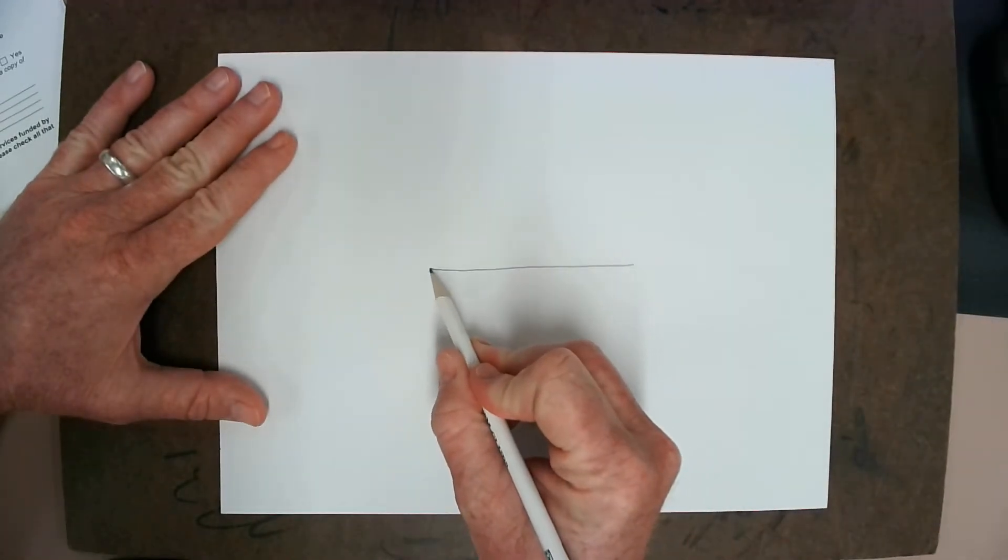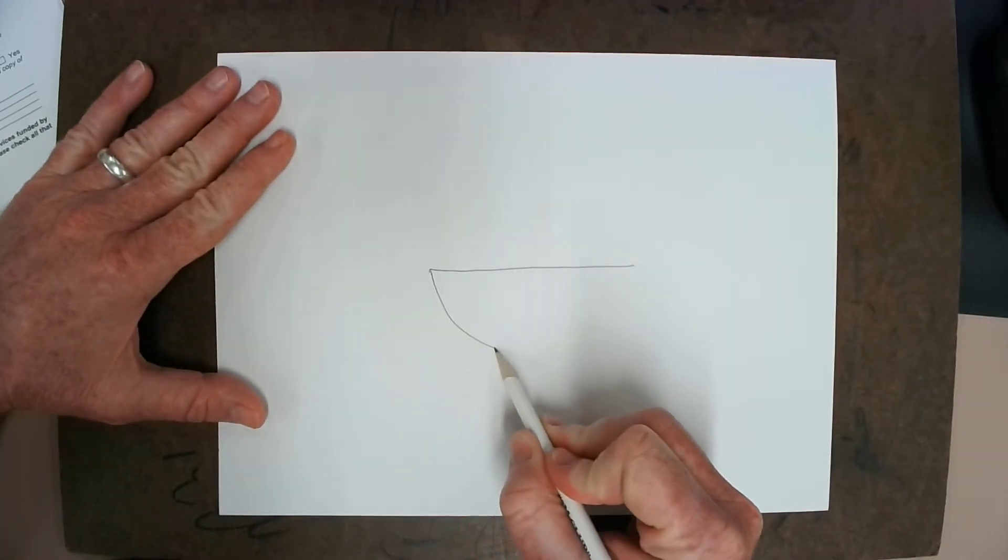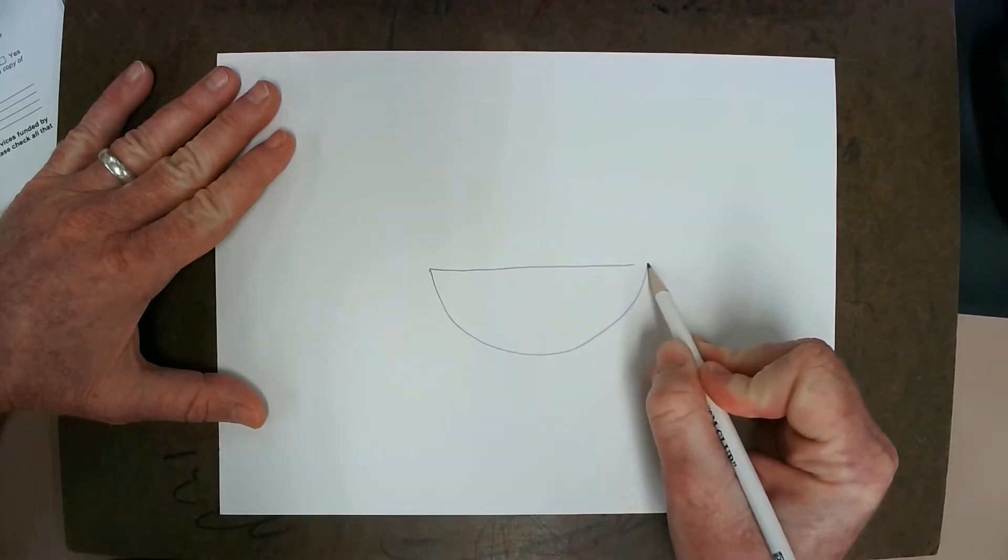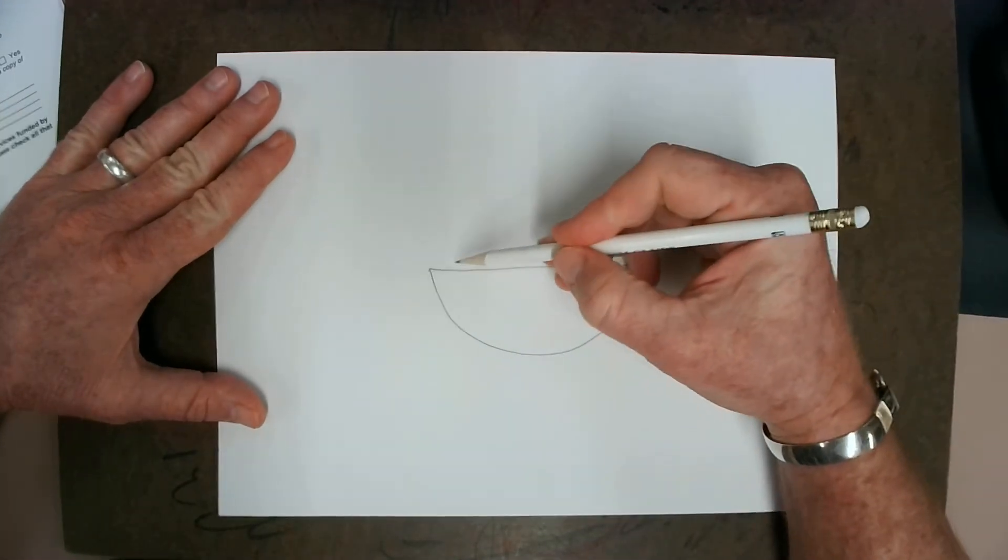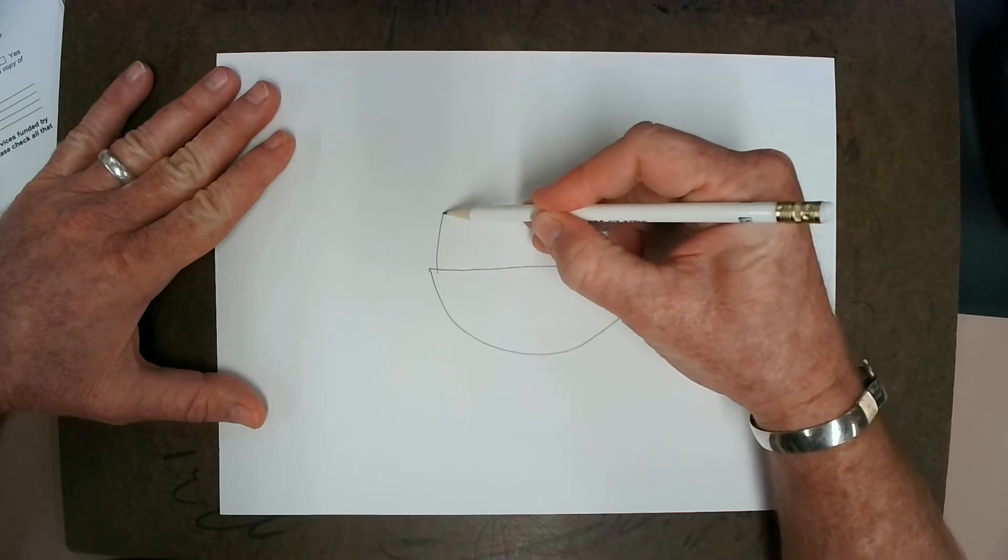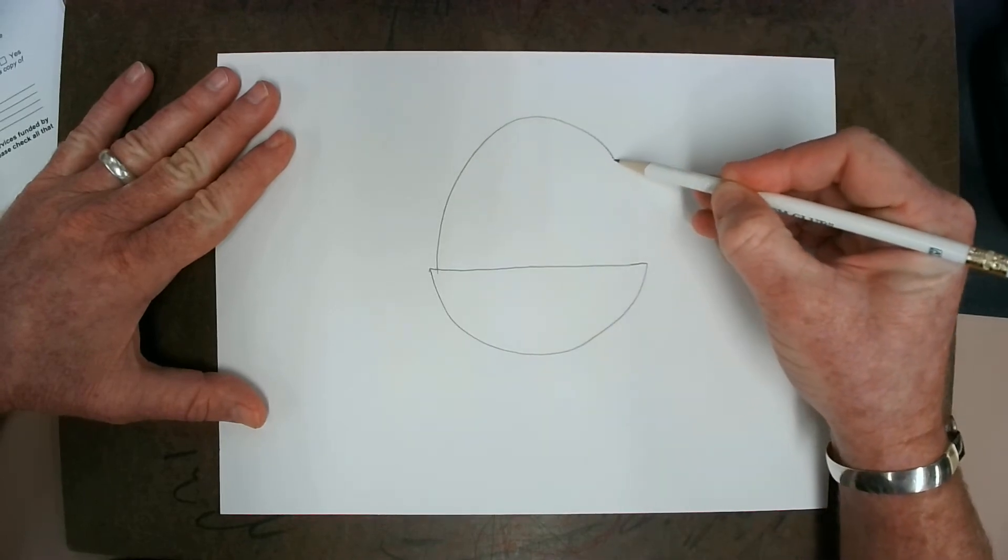And now I'm going to draw a curved line underneath it, like a big upside-down U. Actually, this almost looks like an upside-down umbrella. Then, I'm going to make another curved line on top. This is the top of my alien's head.